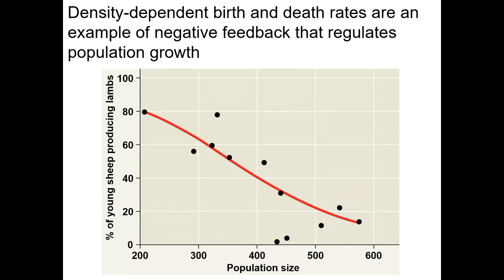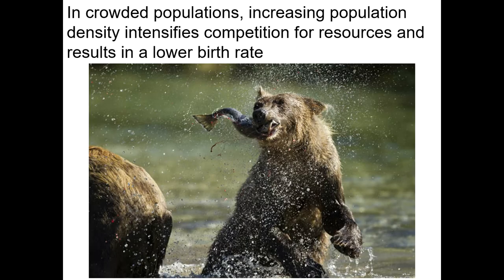Here's an example: the percentage of young sheep producing lambs. A year-old sheep could get pregnant, but it would be stronger and healthier if it waited. In a very low population size, 80% of those young sheep will produce lambs. But if you have a much higher population size for a given area, very few of the young sheep produce lambs. This study shows that in crowded populations, you fight more for resources, which decreases birth rate because you're putting energy into fighting rather than reproduction.